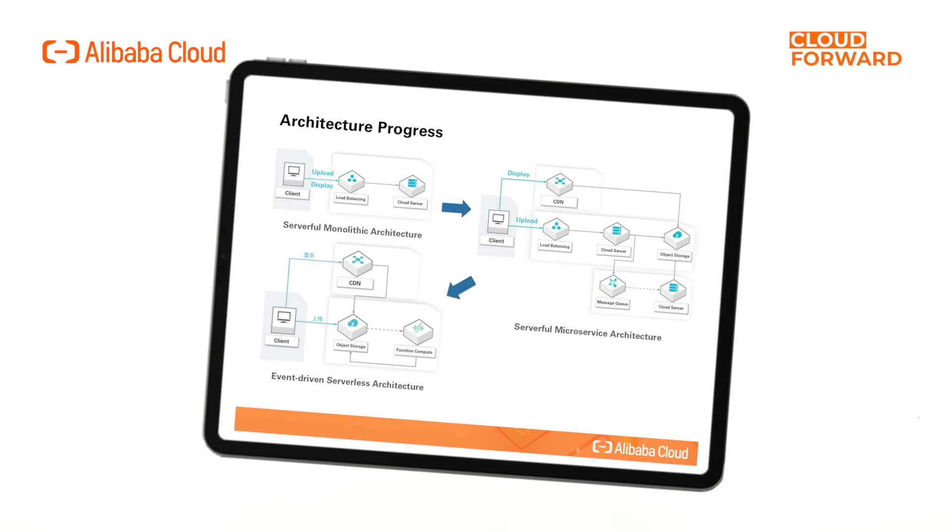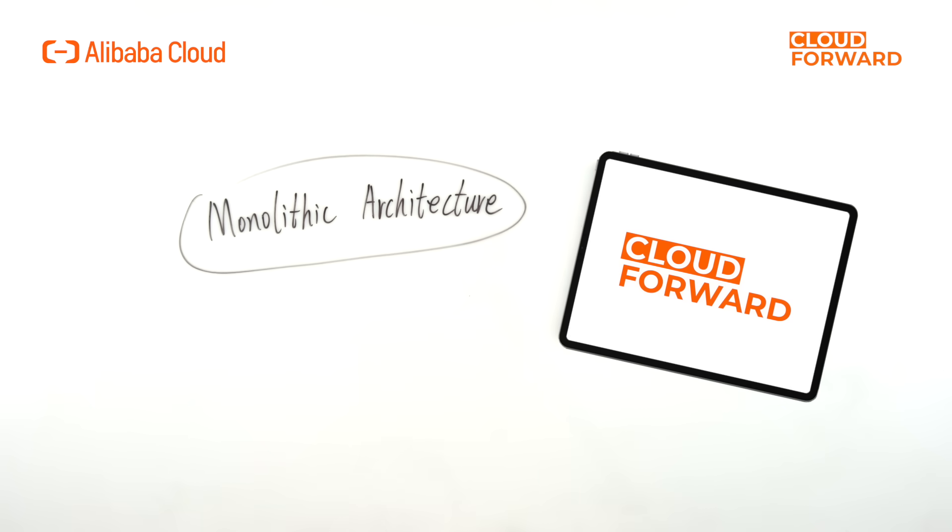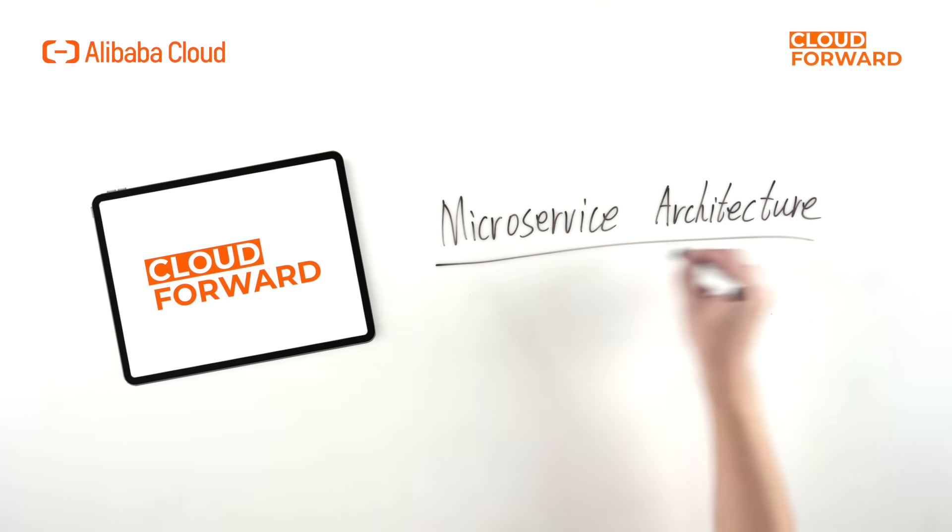The technology architecture for this scenario has gone through an evolution of server-based monolithic architecture, server-based microservices architecture, and serverless architecture. Server-based monolithic architecture faces issues such as limited space on a single server, the need to purchase more servers, and whether web application servers are suitable for CPU-intensive tasks. The server-based microservice architecture solved most of these problems, but still faced challenges such as managing high availability and elasticity of application servers.